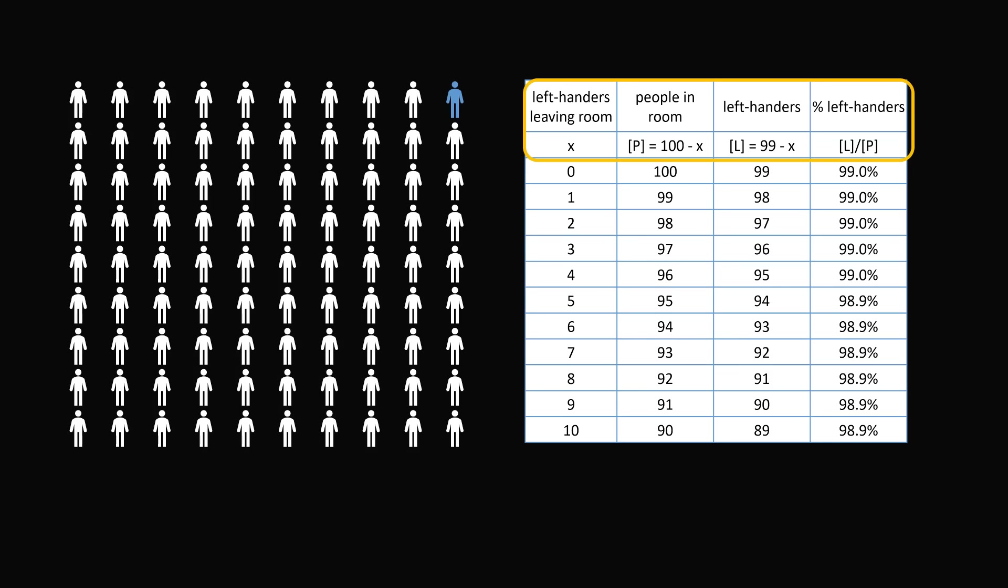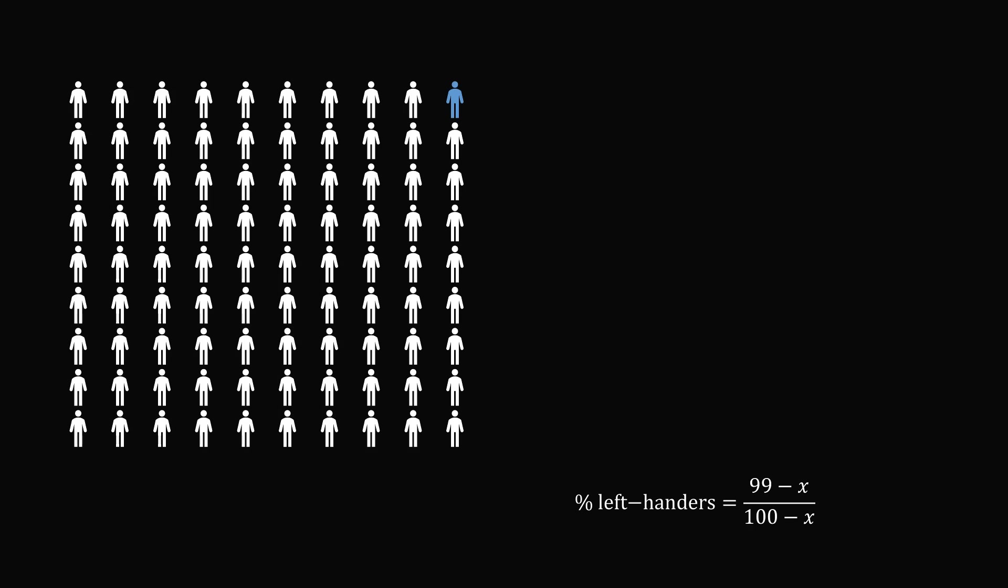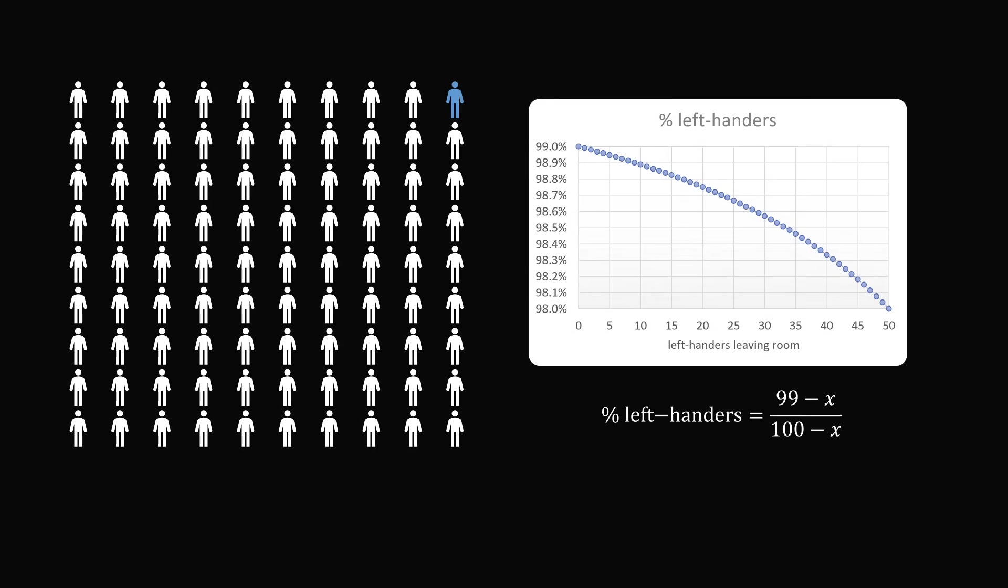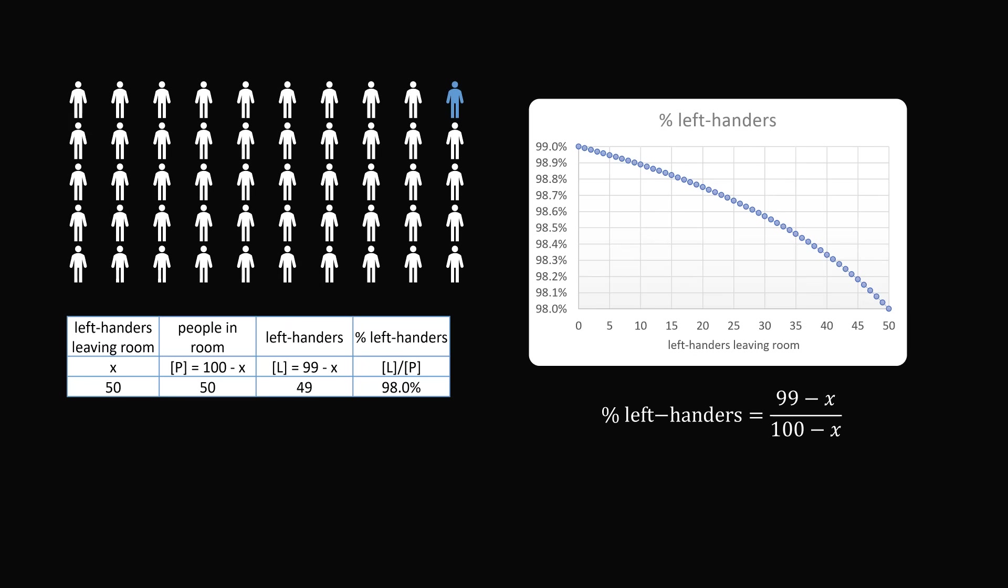We can see that the percentage of left-handers in the room when x left-handers leave the room is given by the formula 99 minus x all over 100 minus x. Let's go ahead and graph this formula and see where we get 98% of the room is left-handers. This happens when 50 left-handers have left the room. So we can go ahead and verify this. When 50 left-handers have left the room, there will be 50 people remaining, there will be 49 left-handers, and 49 divided by 50 is exactly equal to 98%. So the answer is that 50 left-handers have to leave the room.